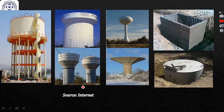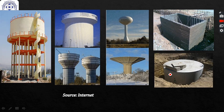Here are pictures collected from the internet showing different types of water tanks — overhead water tanks located above the ground level, water tanks resting on ground, and underground tanks which are covered with earth fill.